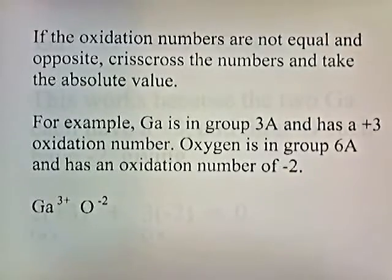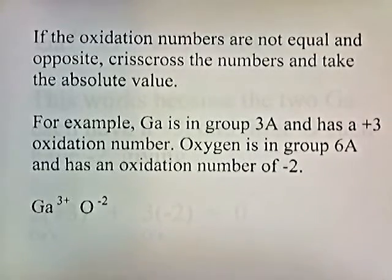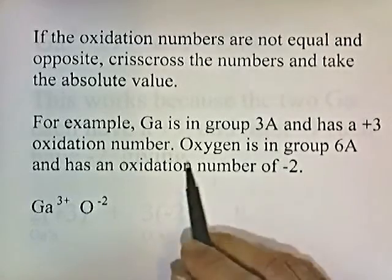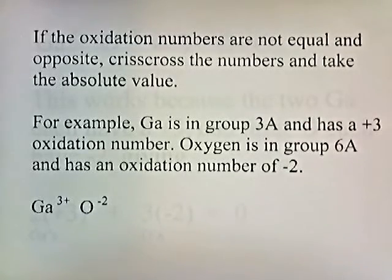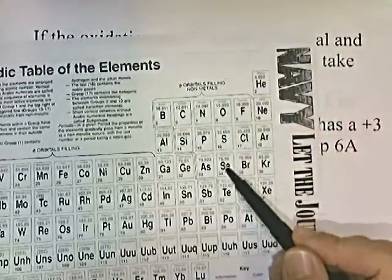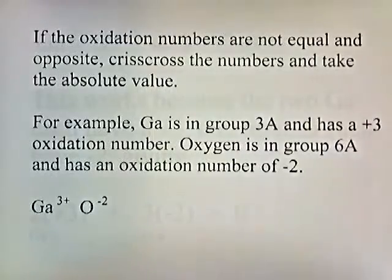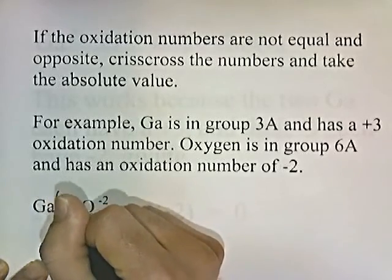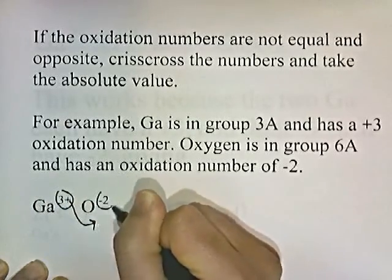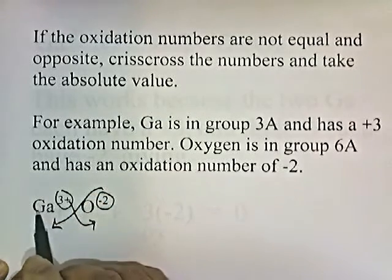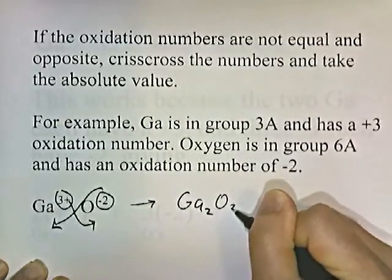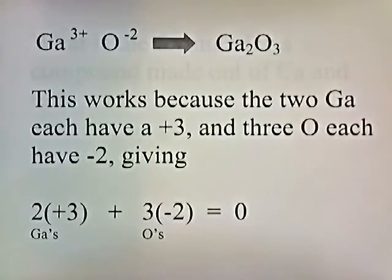If the oxidation numbers are not equal and opposite, you criss-cross the numbers and take the absolute value. For example, gallium is in group 3A with a plus three oxidation state, and oxygen is in group 6A with an oxidation number of negative two. To write the formula, we take the three and move it down to oxygen's subscript, and the two and move it down to gallium's subscript.